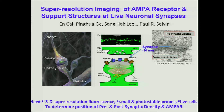We need small and photostable probes. If you have small probes like organic fluorophores, they tend not to be photostable, so you can only look for a few seconds. If you want very photostable probes, they tend to be quantum dots, which can last for hours, but the problem is they're sufficiently large — typically 20 nanometers in diameter — that they don't actually fit very well in the synapse. Third, we want to see live cells, not fixed cells.